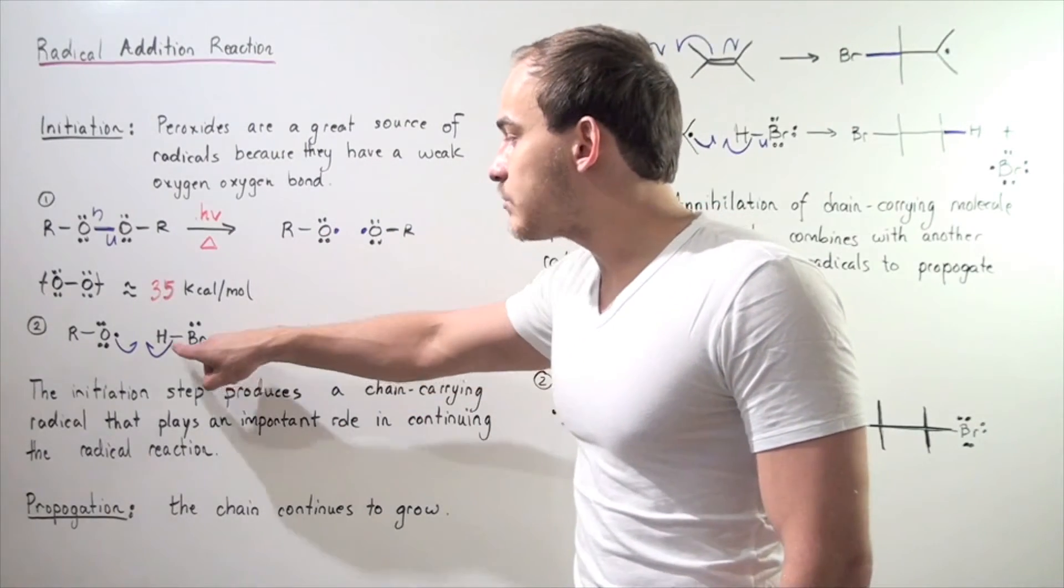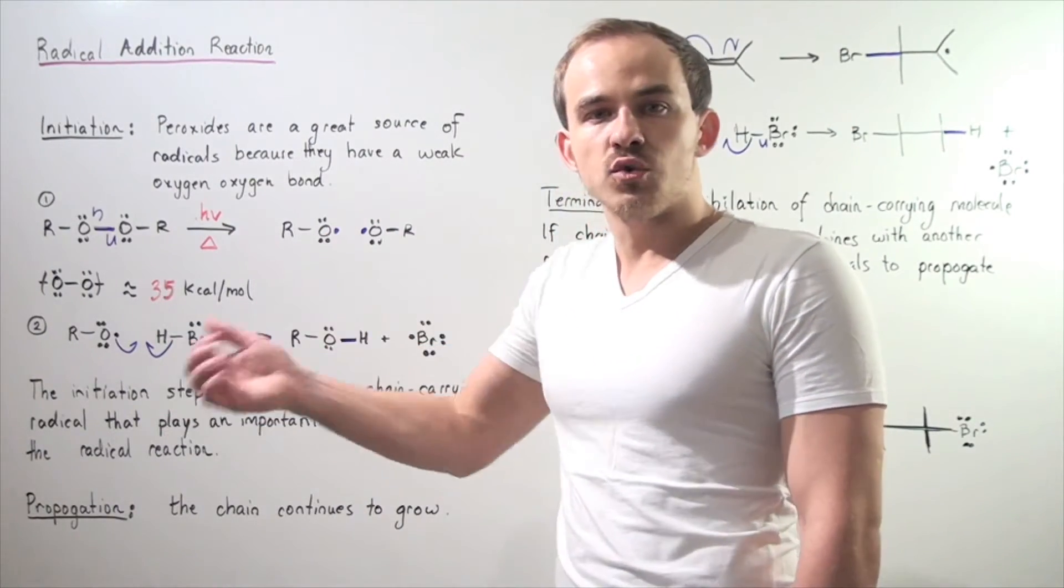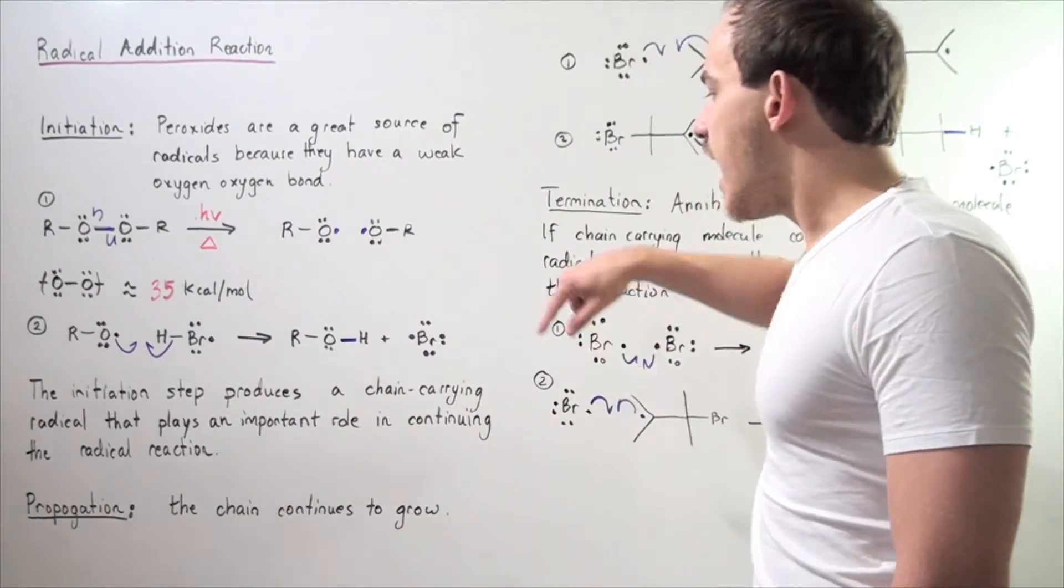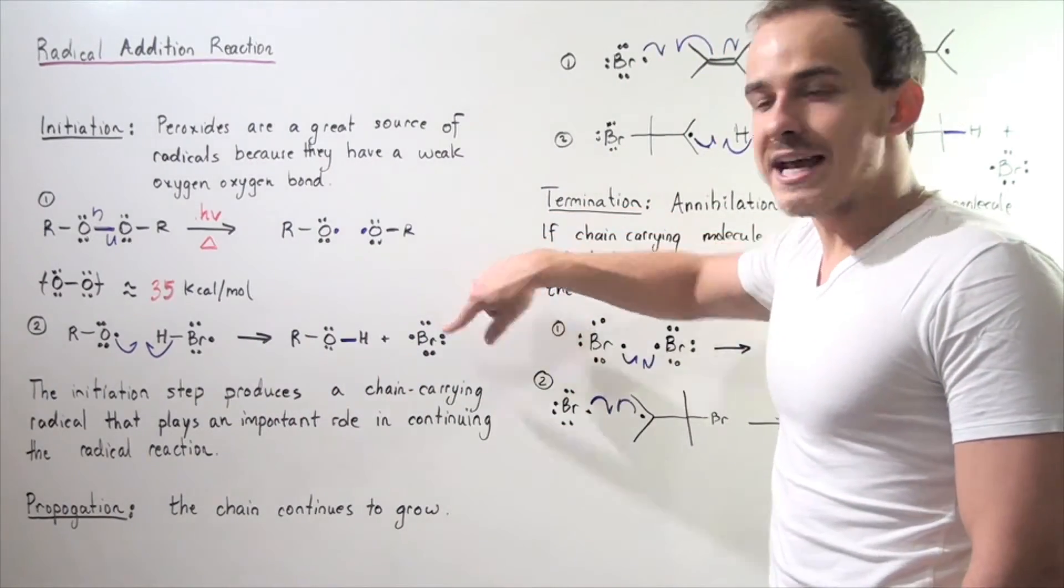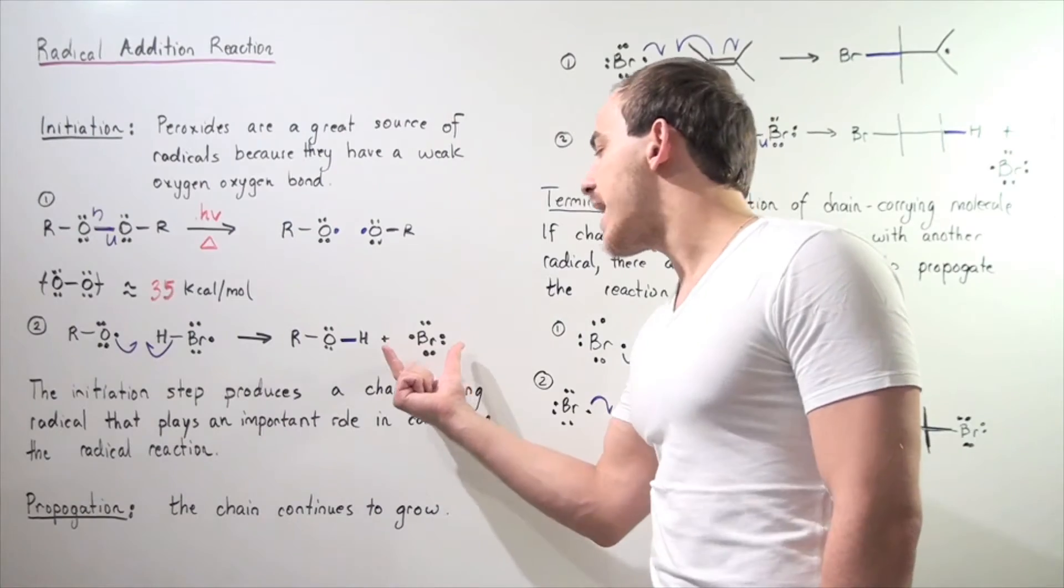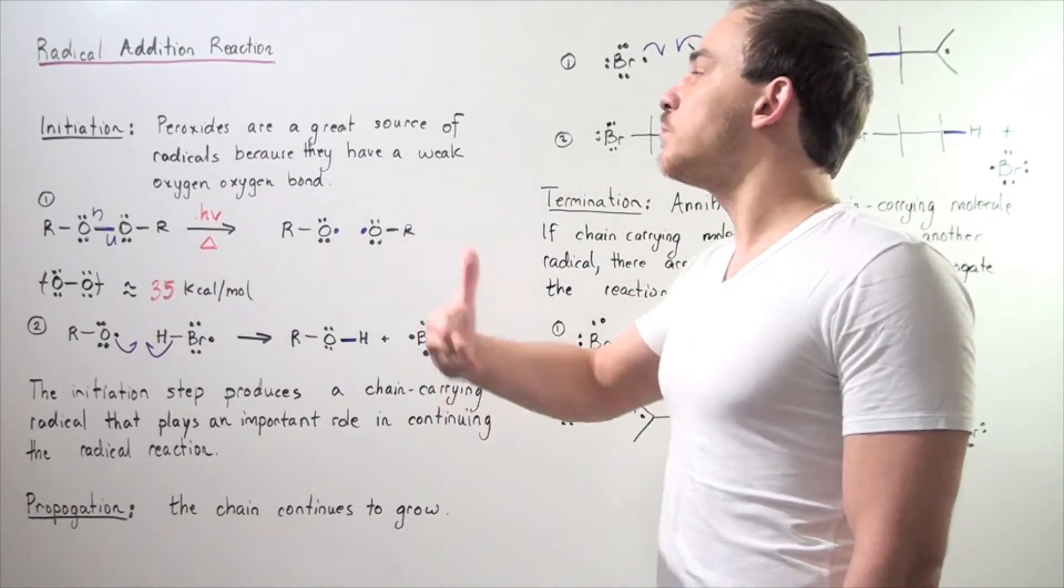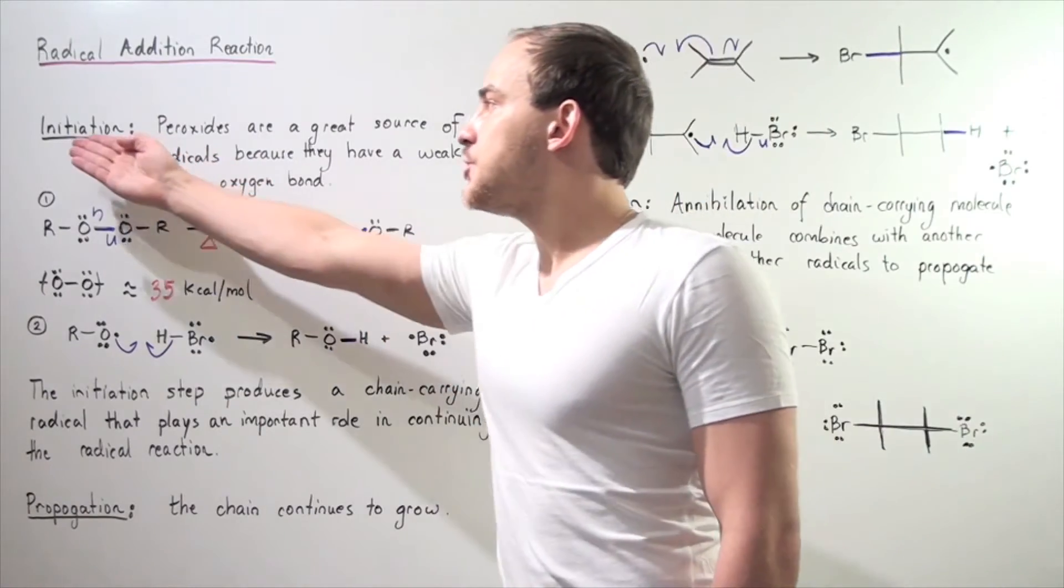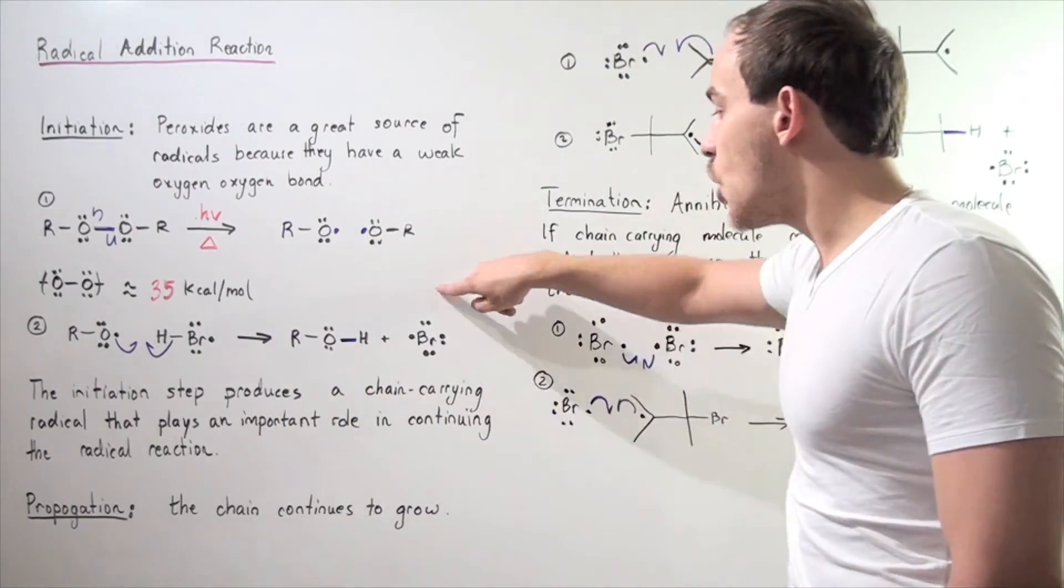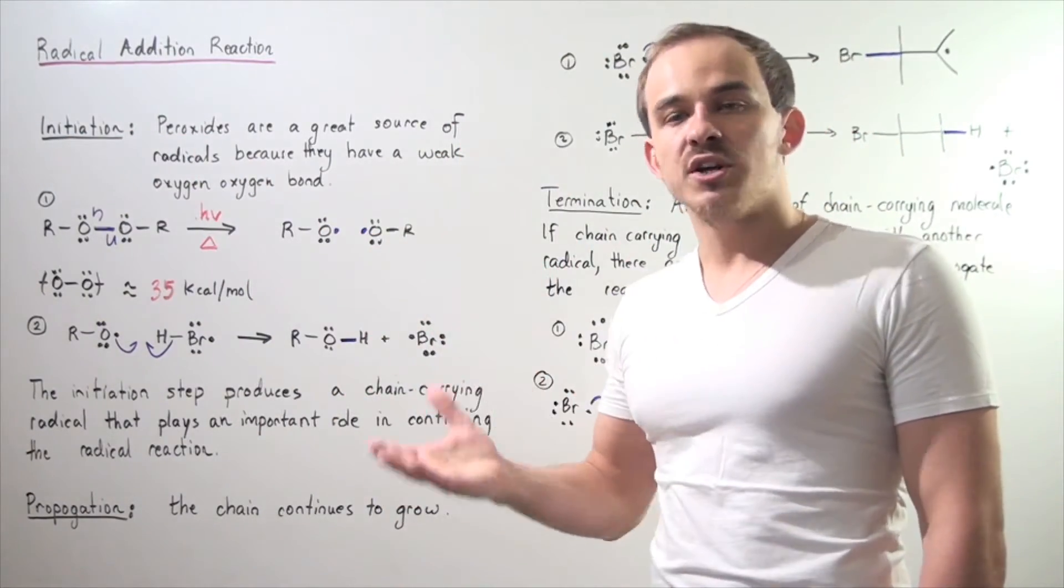One of the electrons in the sigma bond dissociates and stays on this bromine, and we get the following neutral radical. This radical is the end product of our initiation reaction and is known as a chain-carrying radical.